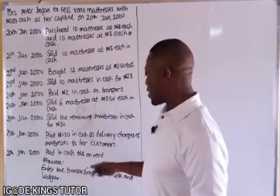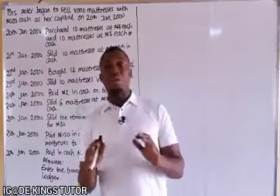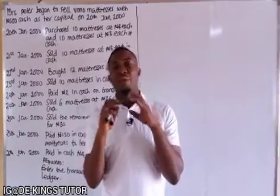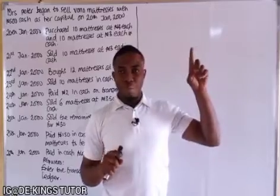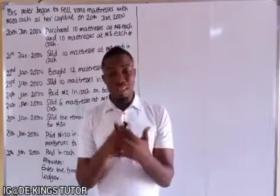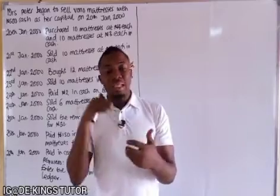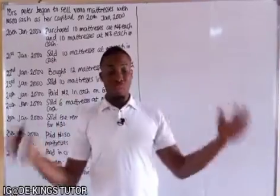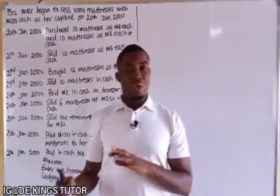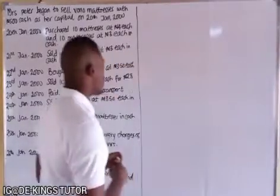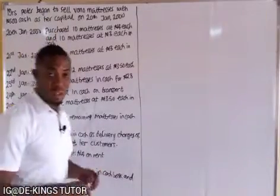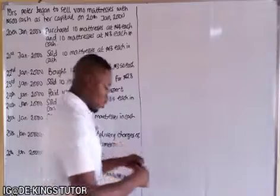We have already explained the single column cash book — please watch that video if you have not seen it, either linked above or in the description. That will ensure you understand what we are talking about. The single column cash book has a specific format and specimen. The cash book is where we record all cash transactions, and if you notice, everything listed here is a cash transaction.